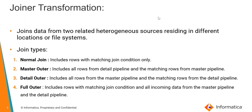Joiner transformation is used when two heterogeneous sources residing in different locations or file systems need to be joined — for example, a database table and a flat file. The joiner transformation can join homogeneous sources as well. It joins data based on the join condition and the join type.